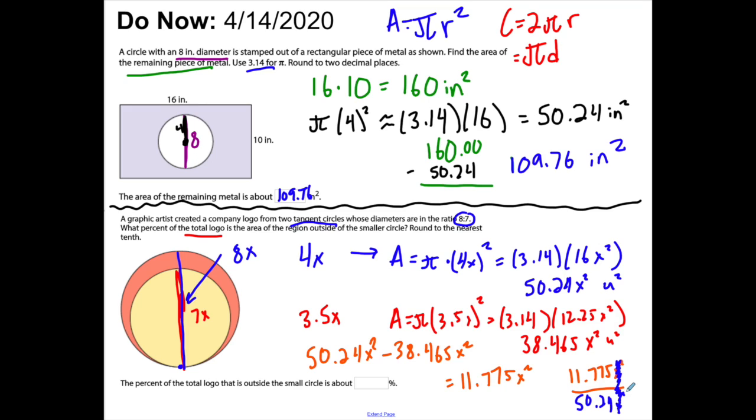If you just set this up as 7 to 8, you'd get the same answer. I'm going to take 11.775 and divide by 50.24. What I get is 0.2343. They want a percent, so I convert that to a percent and round to the nearest tenth. It's 23.4%. If you look at this, if you look at that orange piece surrounding the yellow piece, it looks like a little bit less than a quarter of the total figure, because that yellow circle on the inside takes up about three-quarters of the figure.